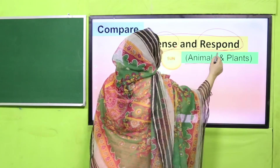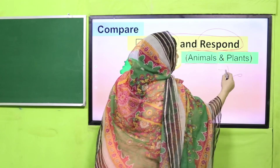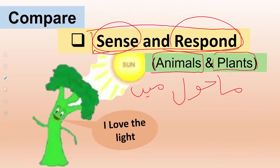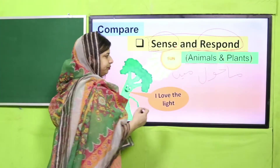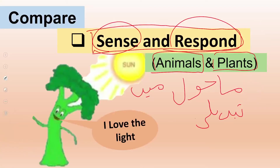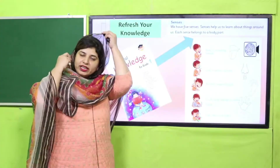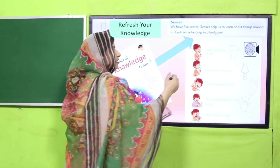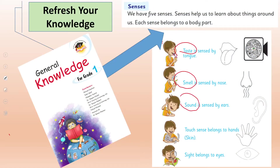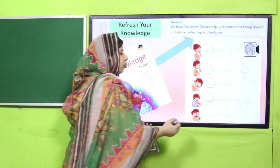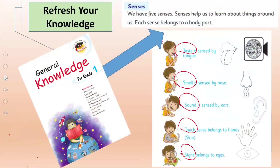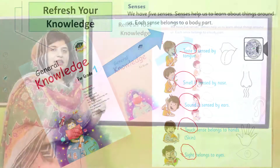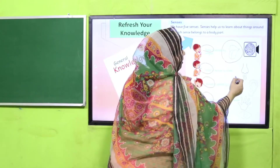Let us start to compare how do plants and animals sense and respond. Plants aur animals apne aasgaate ke mahol mein tabdeeli ko kis tarha mehsoos karte hain aur us pe kis tarha apne rad-e-amal ka izhaar karte hain. You have already studied in grade one that we have five basic senses: we can hear, we can taste things, we can smell things, we can touch things and feel them, and we can see things around us. All these senses are connected with specific body parts.